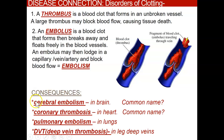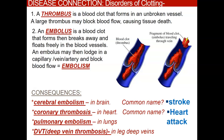Let's look at some consequences of embolism. A cerebral embolism in the brain is commonly called a stroke. Coronary thrombosis is in the heart and is a heart attack. Pulmonary embolism occurs in the lungs — pulmono is the prefix for lungs. And DVT, deep vein thrombosis, occurs in the deep leg veins.